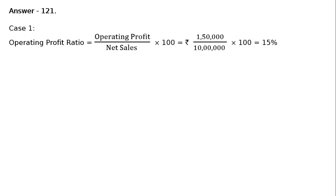This is question 121. Calculate operating profit ratio in each of the following alternative cases. Case 1. Operating profit ratio is equal to operating profit upon net sales into 100.